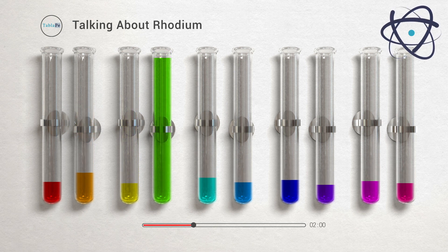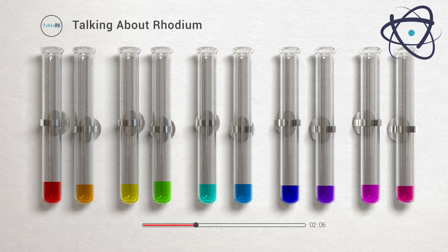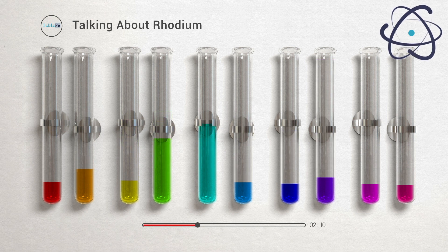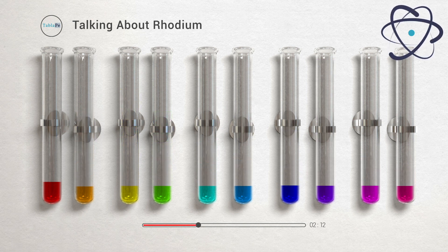After removing the platinum and palladium from the sample, he was left with a dark red powder. The powder turned out to be sodium rhodium chloride. Wollaston obtained rhodium from the powder by treating it with hydrogen gas.